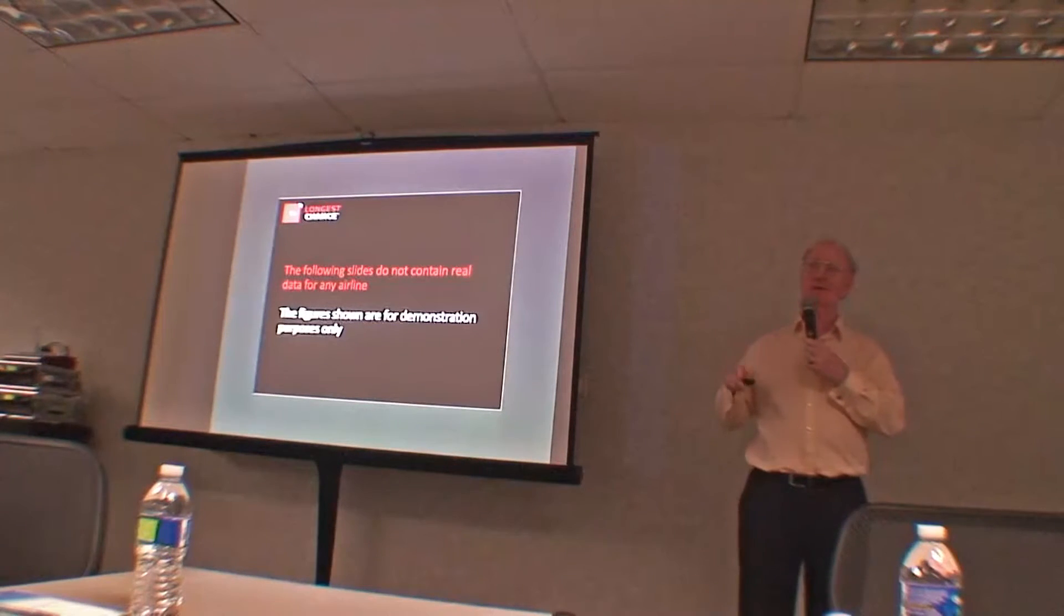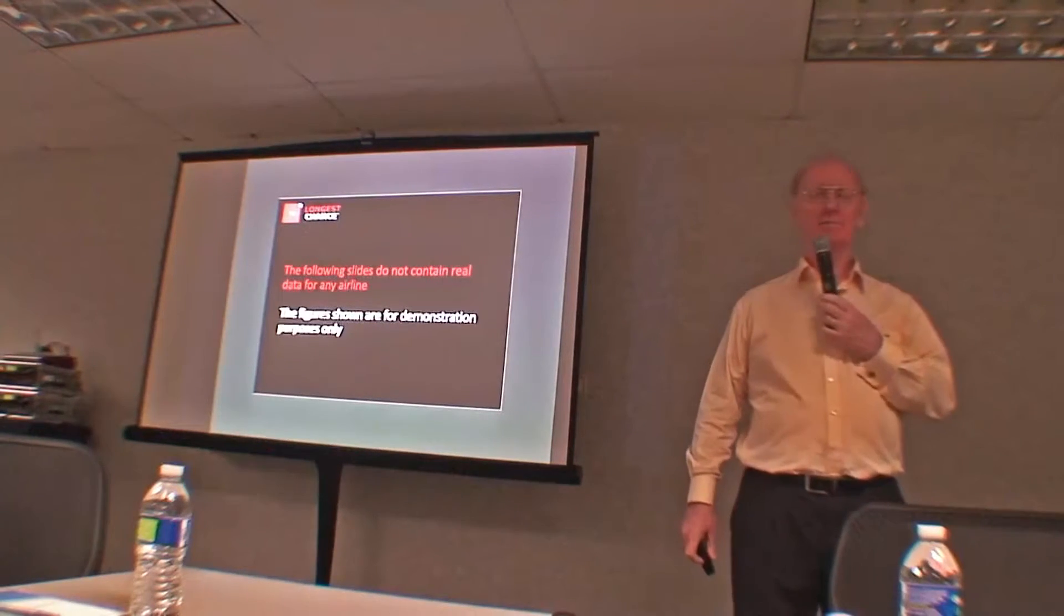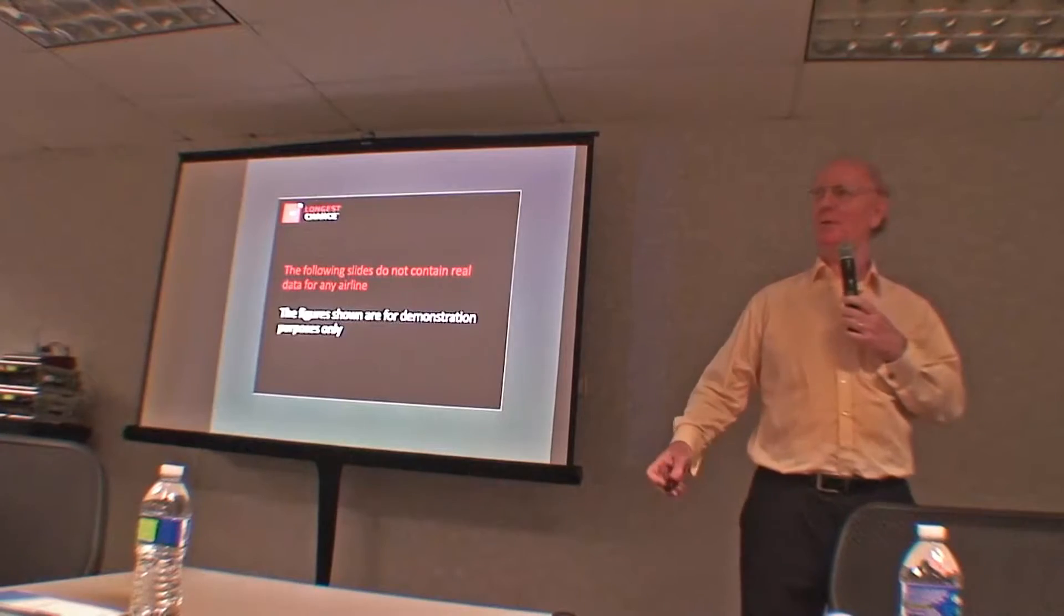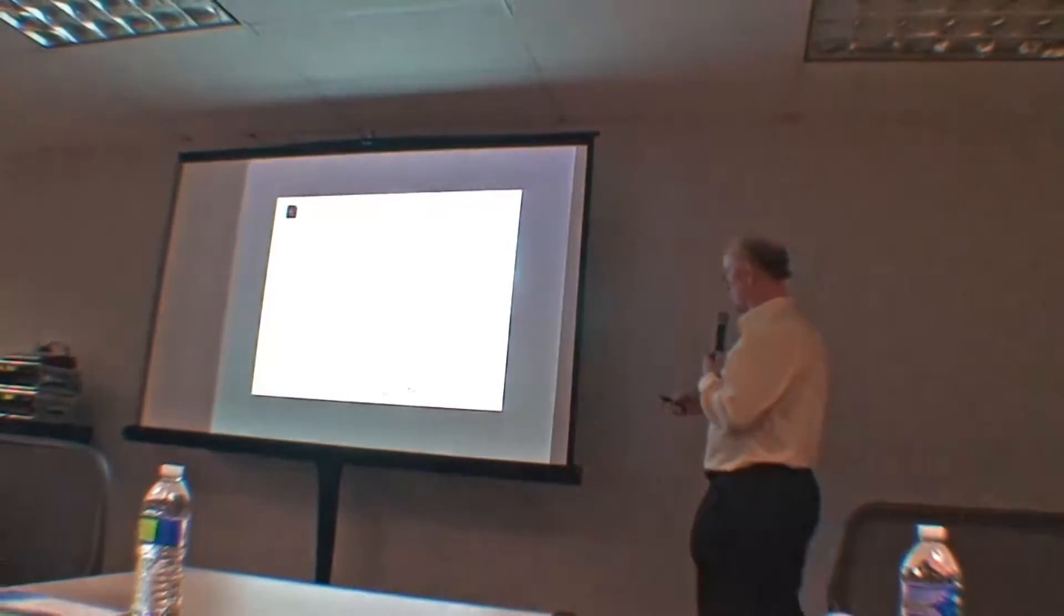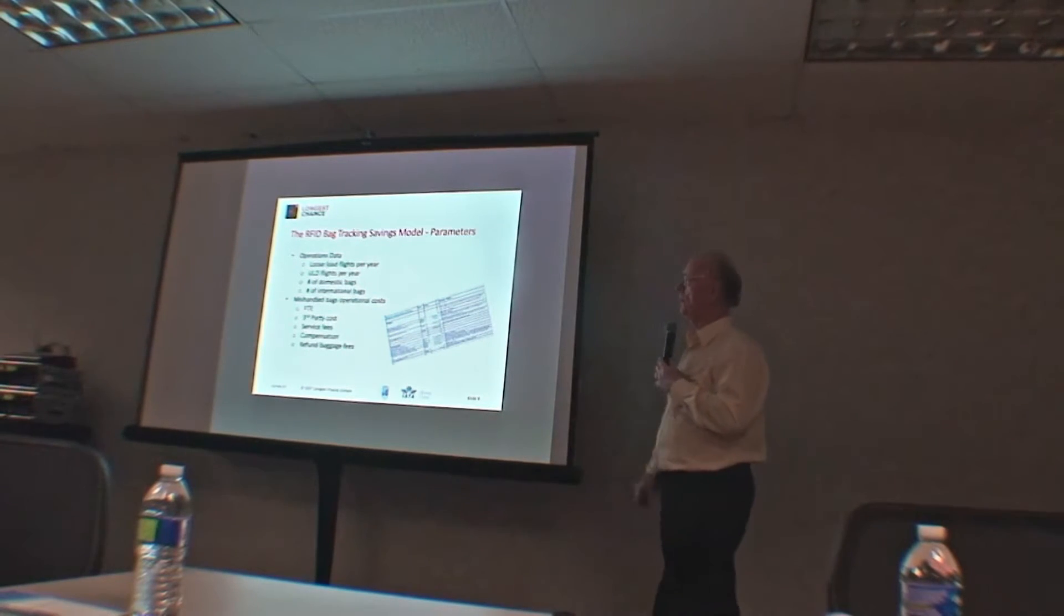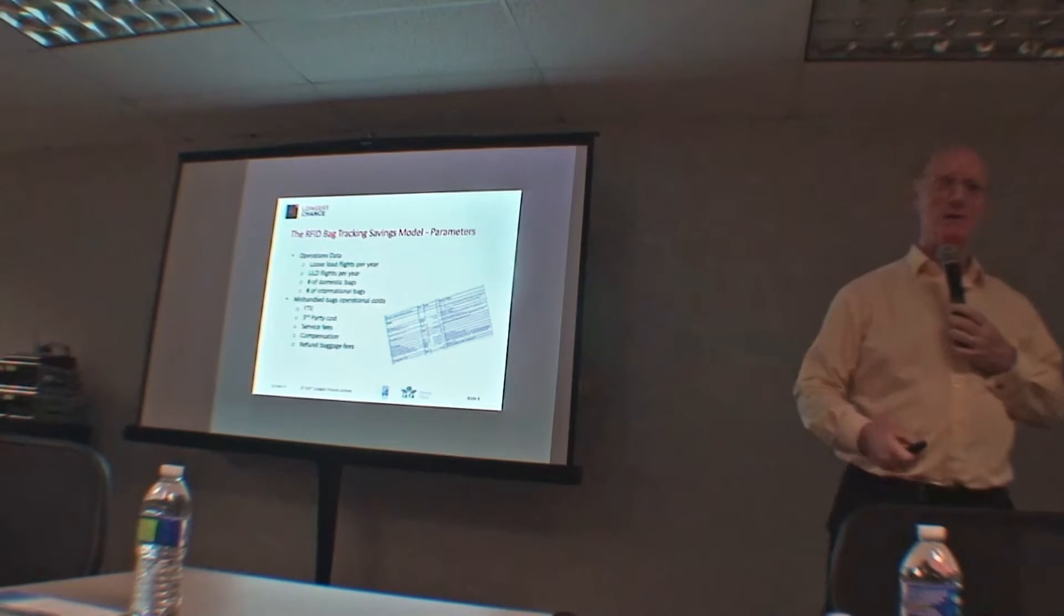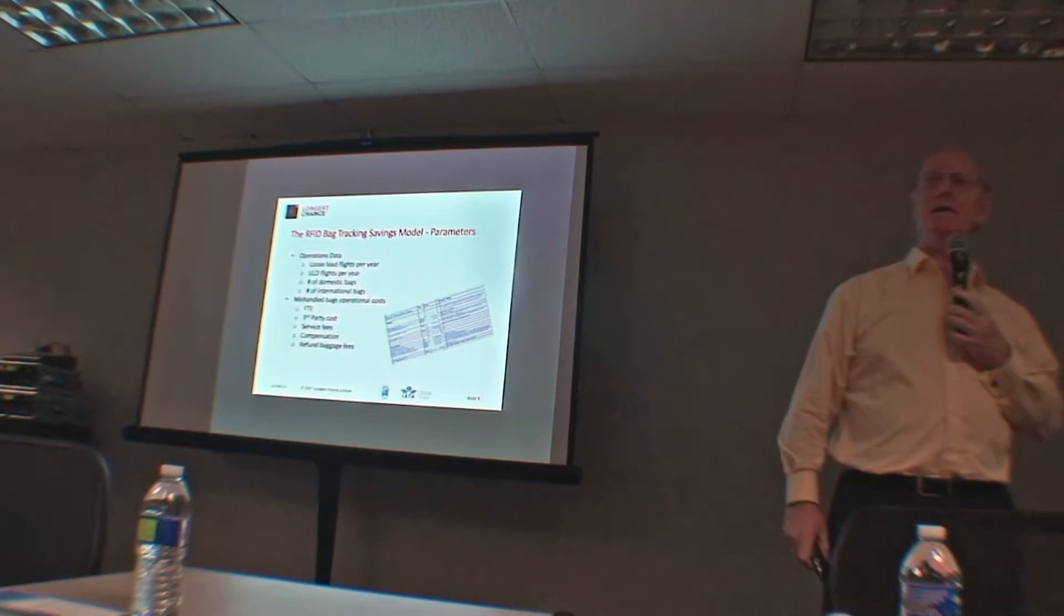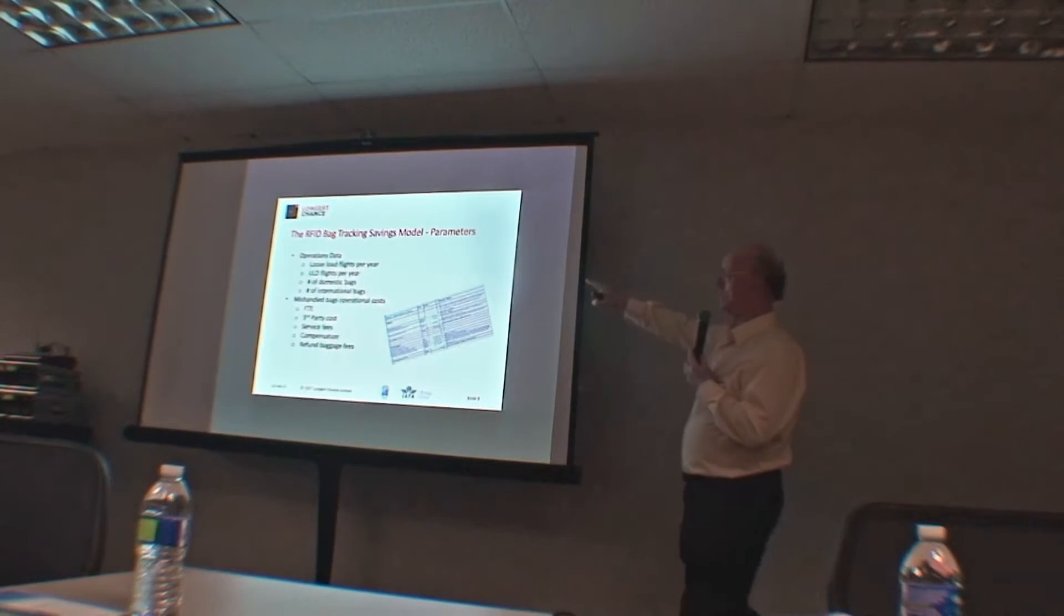Then you take away the incremental expenses that are involved in putting this technology into the process and getting the processes refined. That will then give you your net benefit. Now, this is very, very high level. There's a lot of things in these headings here. There's a lot of detail. But you can see the structure is, I'll have a look at what I think I can improve. I'll take away what it's going to cost me to do that. That's my net benefit. Now, warning. Hazard warning. The data on the next slide is not real. It's really there as just an example. It doesn't represent data from any airline. Well, airline A, actually, we called it, because no one's called that.